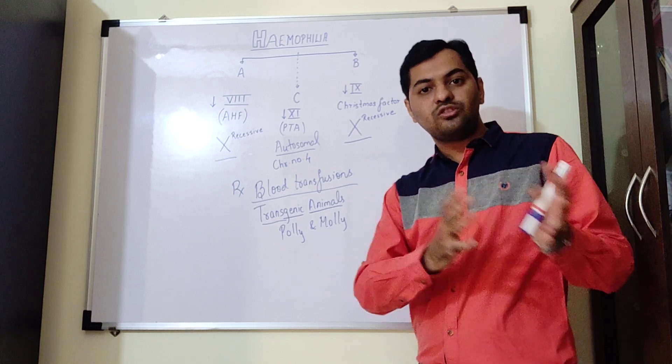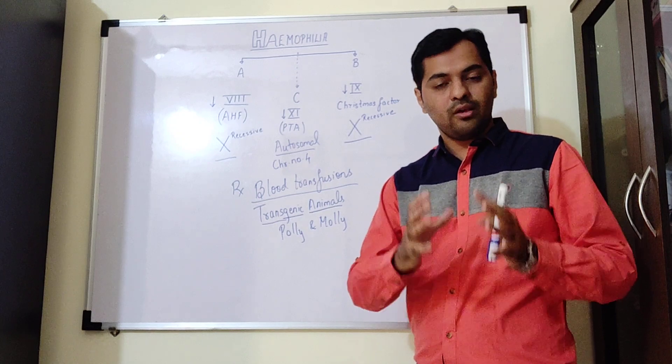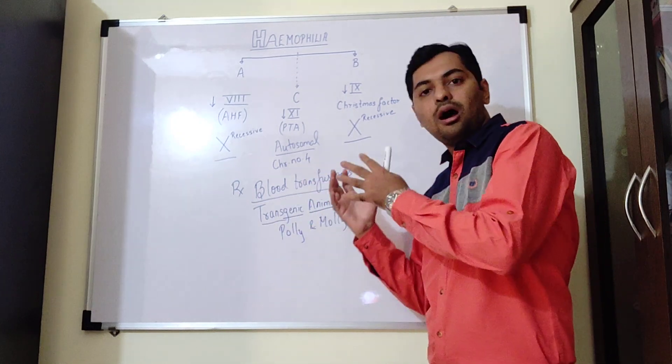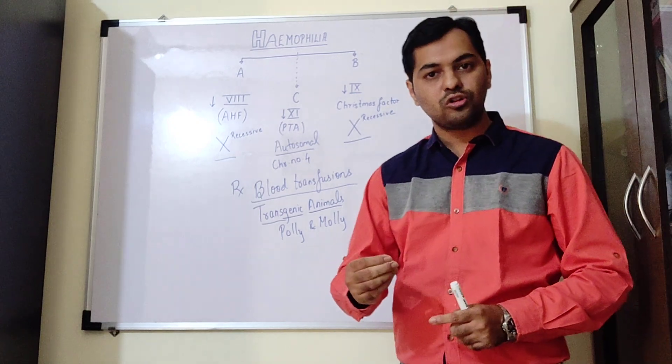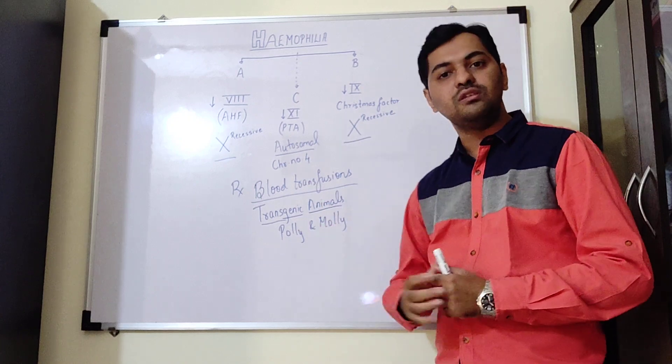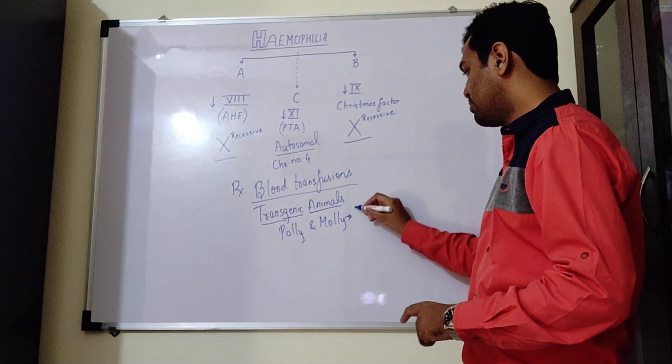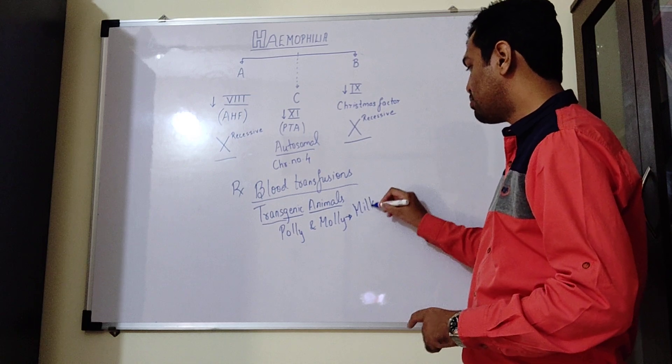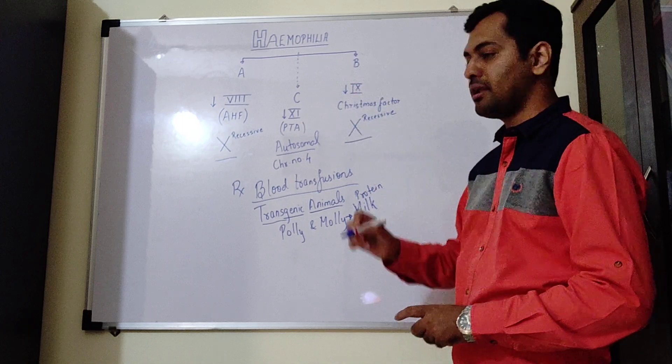Apart from that, Dolly the sheep that was cloned, it was only the procedure of cloning. Whereas in Polly and Molly, apart from the cloning procedure, even recombinant DNA technology has been utilized and the gene for clotting factor 9 has been transferred into these animals. Both varieties produced protein-rich milk. The milk contains this protein, that is clotting factor number 9.